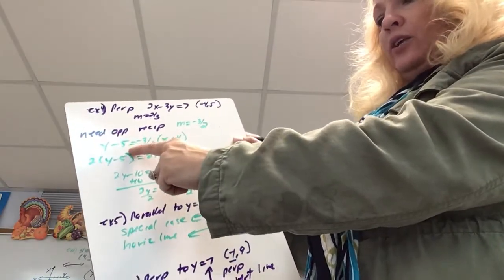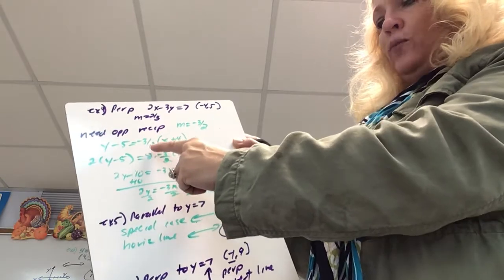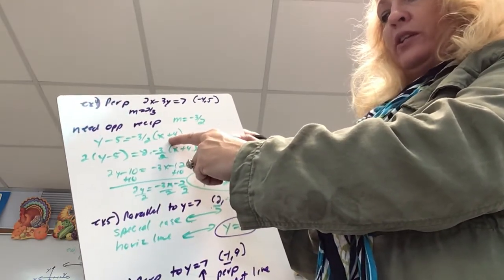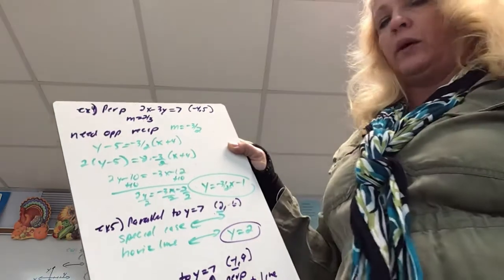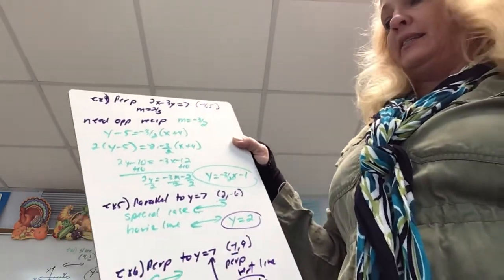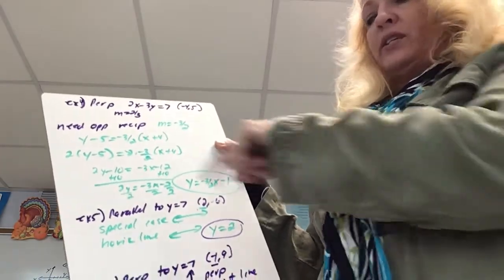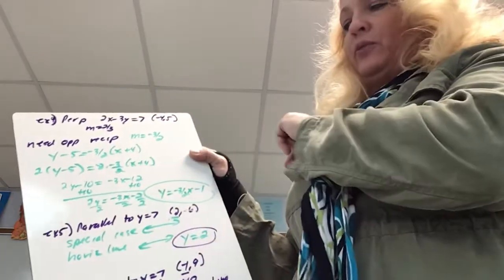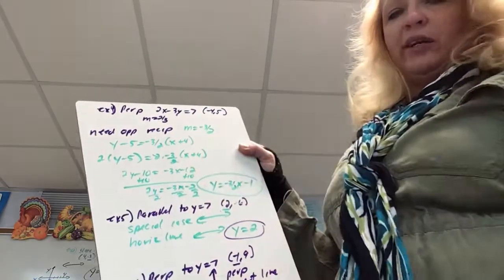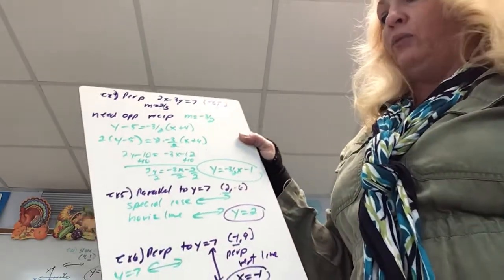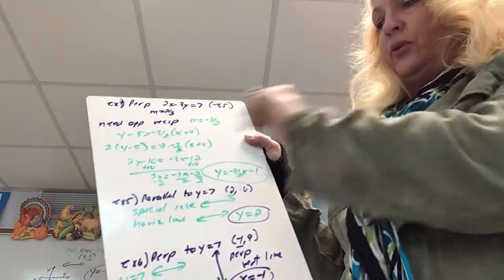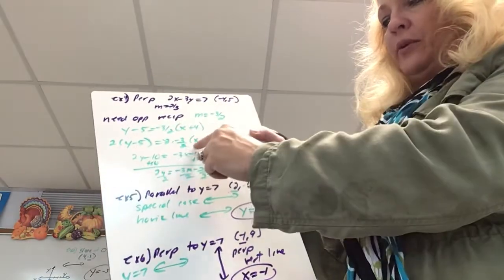y minus 5, where 5 is the y-coordinate, equals slope negative three-halves, times x minus negative 4, which is x plus 4. Now, especially with a fraction that doesn't have 1 in the numerator, I would clear the fraction. Clearing the fraction means getting rid of the 2 by multiplying both sides by 2. These 2's reduce.